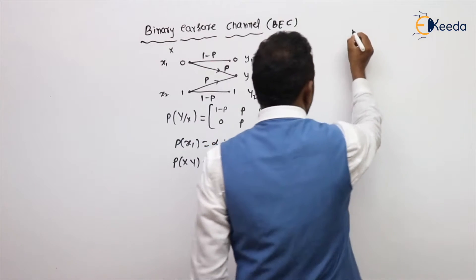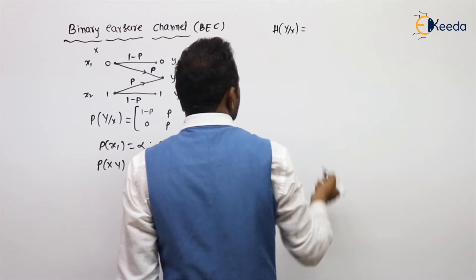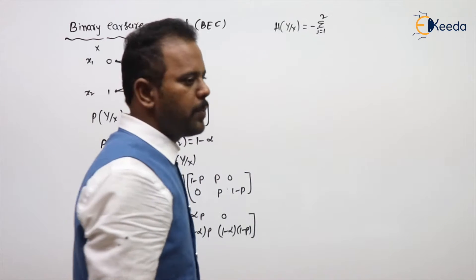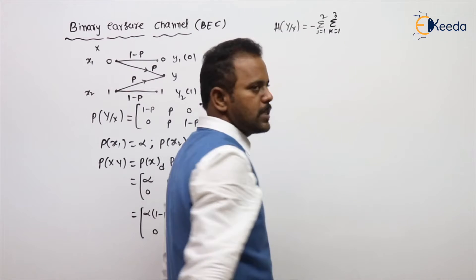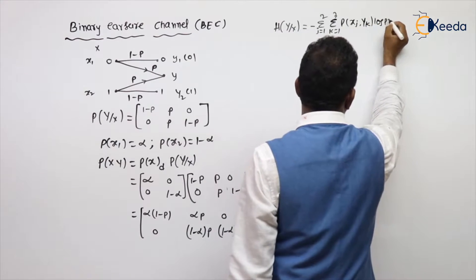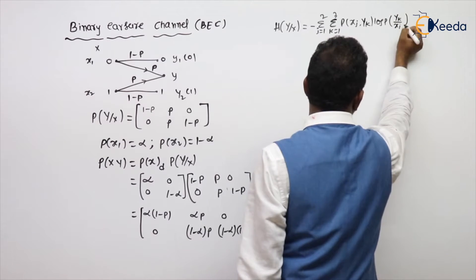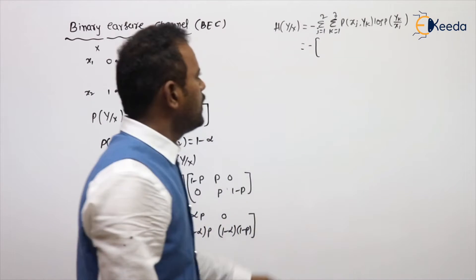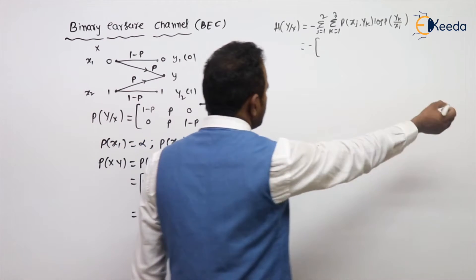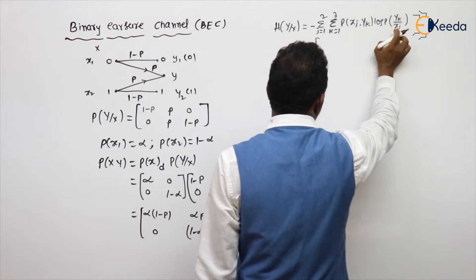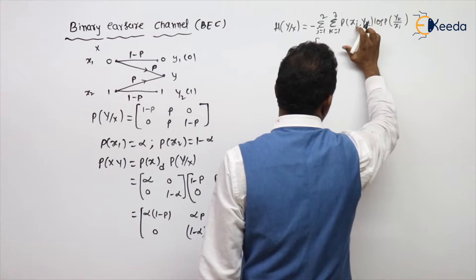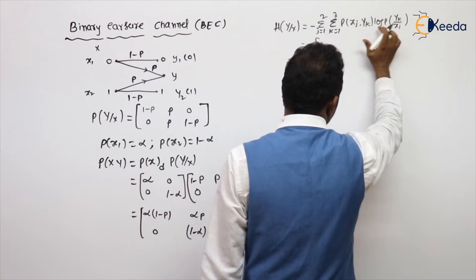Now calculate the entropy of the channel. The formula for the entropy of a channel is: H(Y|X) = minus summation over j=1 to 2 and k=1 to 3 of P(xj, yk) · log P(yk|xj). Expanding all six terms: P(x1,y1)·log P(y1|x1) + P(x1,y2)·log P(y2|x1) + P(x1,y3)·log P(y3|x1) + P(x2,y1)·log P(y1|x2) + P(x2,y2)·log P(y2|x2) + P(x2,y3)·log P(y3|x2).